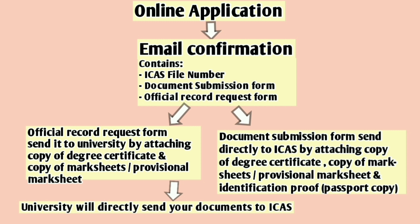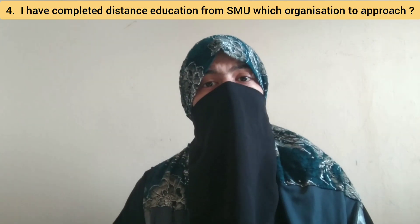What happened in our case is that during the email confirmation we had received only one form — the official record request form. We filled it up and sent it to the university. Once the university had sent the documents to ICAS, then ICAS sent another email which included the document submission form. We took the printout, filled it up with the necessary documents asked by ICAS, and couriered it to the ICAS address mentioned on their official site.